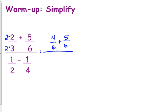On the bottom, they need a denominator of 4, common denominator of 4. So we're multiplying by 2 on that one as well, so we've got 2/4 minus 1/4. So on the top we have 9/6, on the bottom we have 1/4.